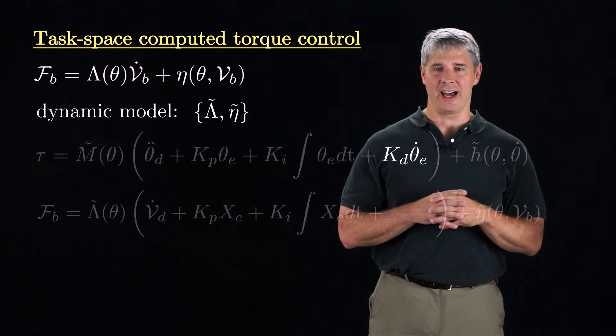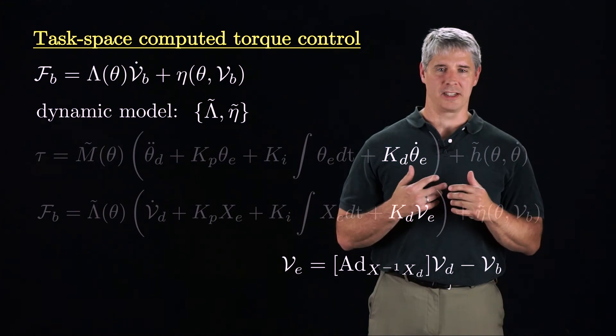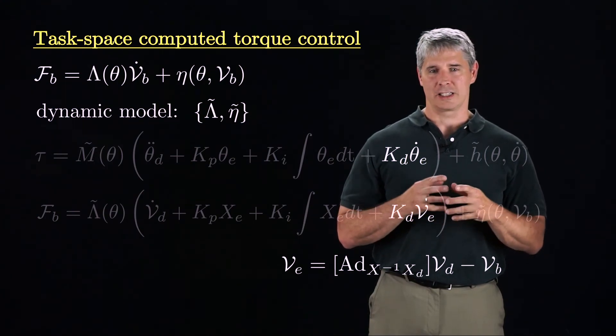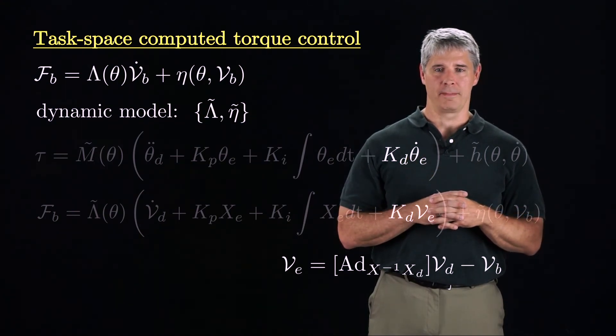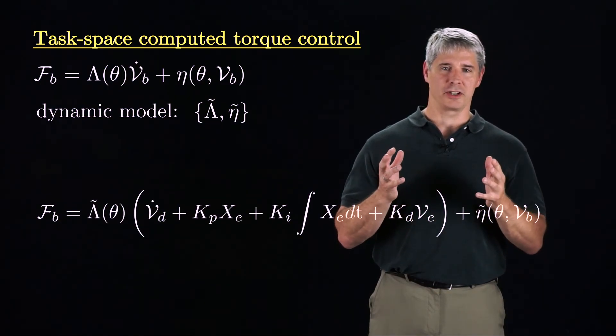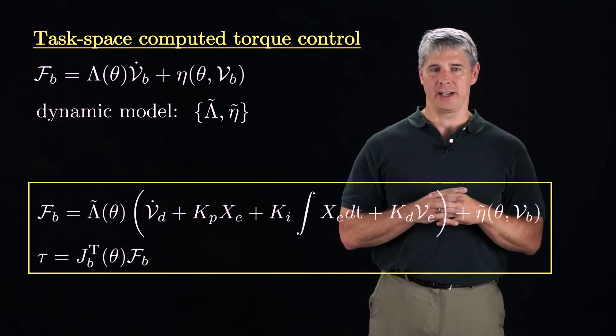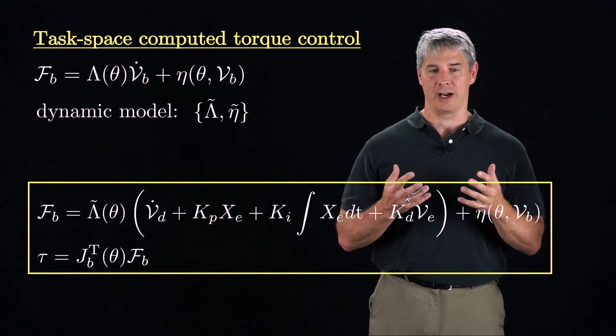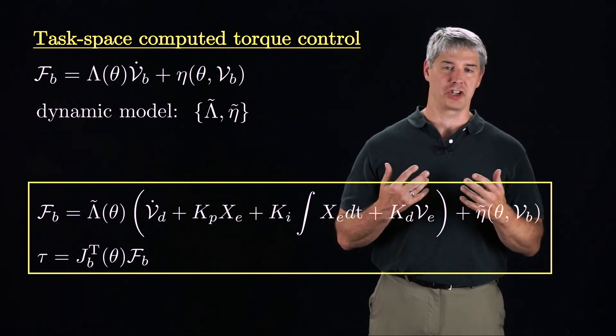Finally, the analogy to theta E dot is the twist VE, which is the desired twist VD, expressed in the current end-effector frame, minus the current twist VB. This is the resulting control law, and the actual torques supplied at the joints are obtained by pre-multiplying the control wrench FB by the Jacobian transpose.